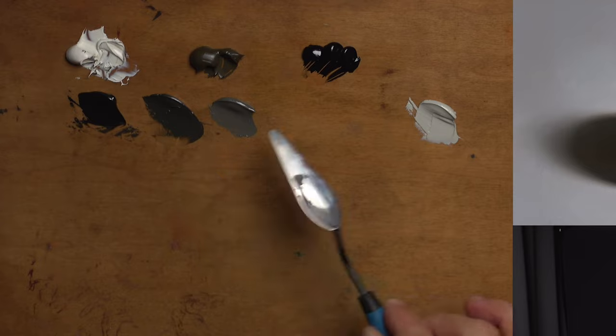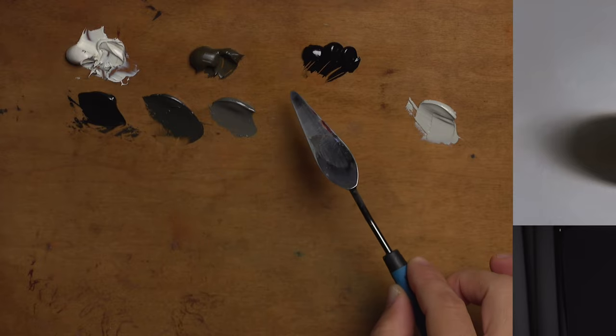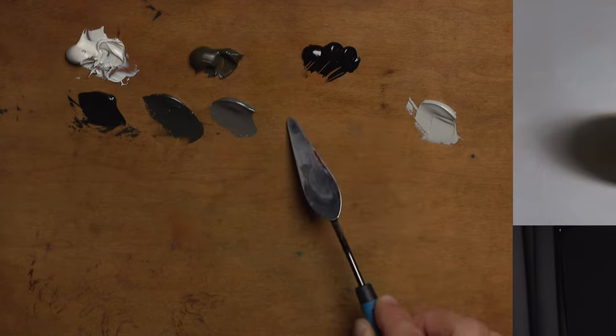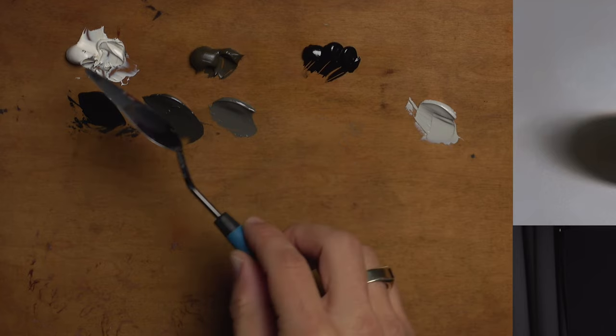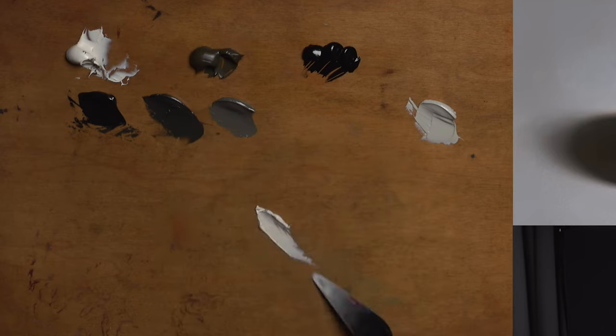Now remember for these darker color values, I was starting out with my darker pigments. Now that I'm getting into this range of lighter color values, I'm going to start out by actually using my flake white as a base for the mixture.